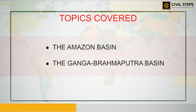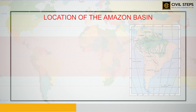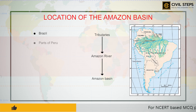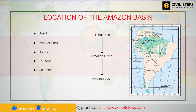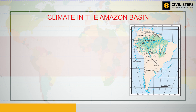First, let us discuss the location of the Amazon basin. Numerous tributaries join the Amazon River to form the Amazon basin. The river basin drains portions of Brazil, parts of Peru, Bolivia, Ecuador, Colombia, and a small part of Venezuela.